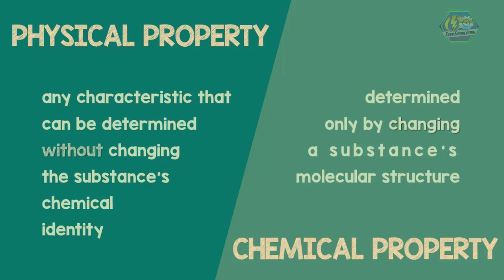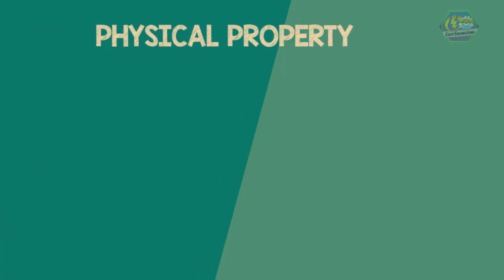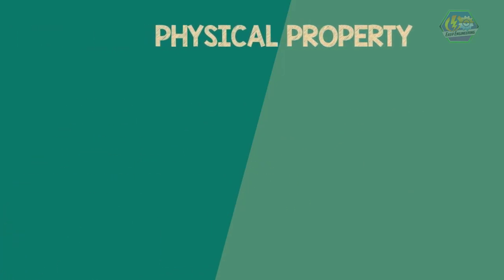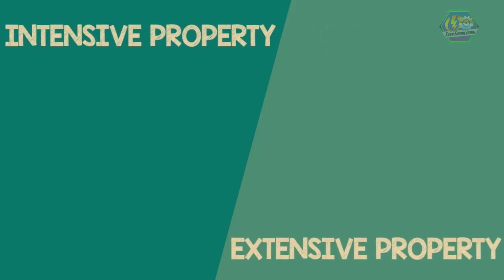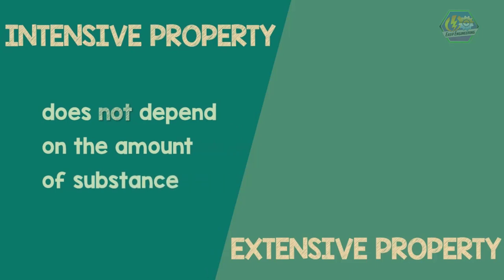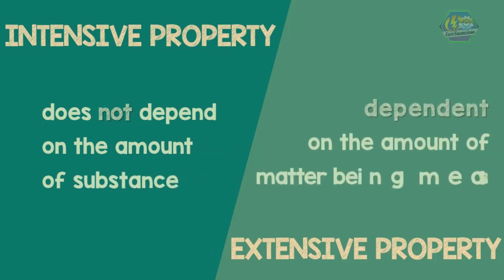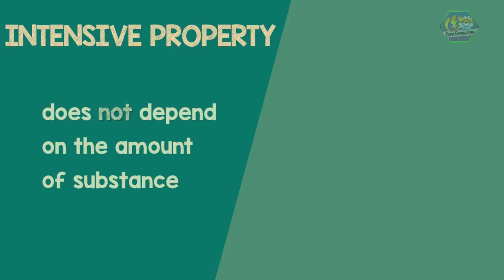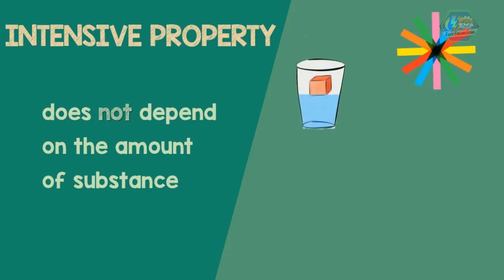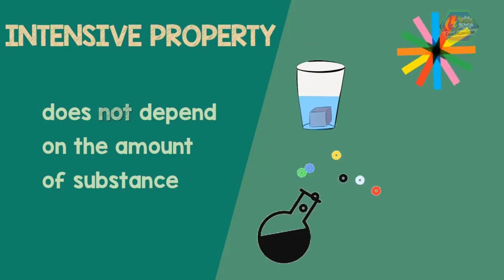We will go into details on both properties, but first we will talk about physical properties. Physical properties are divided into two smaller parts: intensive property and extensive property. Intensive property is a characteristic of matter that does not depend on the amount of the substance, while extensive property is dependent on the amount of matter being measured. Intensive property includes color, density, boiling point, and melting point.